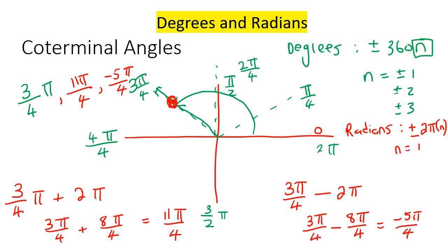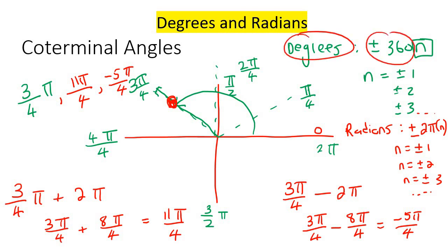So n is any integer number — like 1, minus 1, 2, minus 2 — and you could go on and on. So pretty much what I'm trying to tell you is: if it's degrees, just add or minus 360. If it's radians, just add or minus 2 pi.